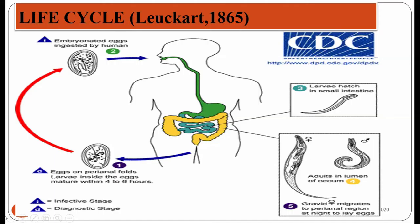In the cecum and vermiform appendix, the male worm mates and then dies after mating with the female worm. The gravid female worm, after being fertilized by the adult male, migrates to the rectum and anus of the infected person. This adult gravid female worm of Enterobius vermicularis is nocturnal in habit. During nighttime, it comes out from the perianal regions and deposits eggs in the perianal and perineal regions. Since the eggs are coated with albumin, they are sticky and attach to the perianal and perineal regions.